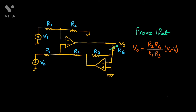Here we can vary RG to get different gains for different amplifier configurations. Notice that in a simple difference amplifier, if you want to vary the gain, you have to tune both resistances — either R1 or R2 simultaneously — which is one difficulty. Here you have only one resistance RG that you need to vary, so you can smoothly get different gain levels. This is the advantage of this circuit, but we have to use two op-amps.